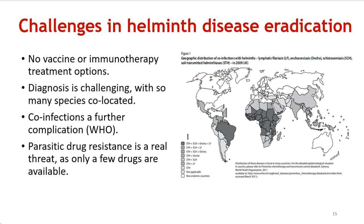Parasitic drug resistance is also a big problem. As you are well aware, the malarial mosquito became immune to all the drugs that were available. Similarly, we expect that parasites will one day develop resistance to currently available drugs — this is only pushing evolution in a particular way. The parasites will always figure out a way to get rid of these drugs using some drug efflux pump, and therefore we will be back on the drawing board all over again. This is the geographic distribution of co-infections of helminths with lymphatic filariasis, onchocerciasis, schistosomiasis, and soil-transmitted helminthiasis — there is a great probability of reinfection or co-infection across species.